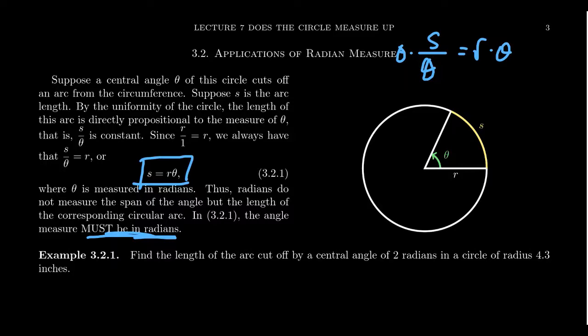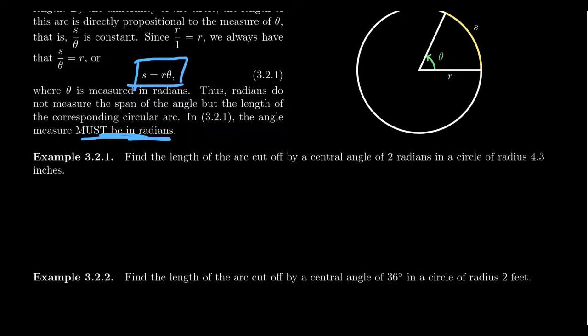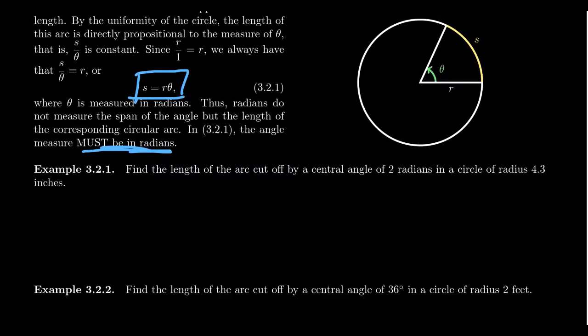So imagine we want to find the length of the arc cut off by a central angle which is measured 2 radians in a circle and the radius is 4.3 inches. So what we're going to see here is that the angle measure was 2 radians, the radius is 4.3, and then the arc length, what is the arc length going to be? Well the formula we just used from above, s is going to equal r times theta, r equals 4.3 inches.